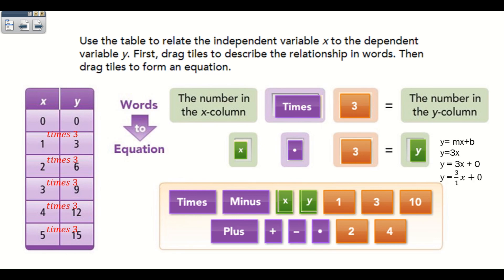Now we change those words into an equation: X times three equals Y. In point-slope form Y equals MX plus B, we write Y equals three times X, or Y equals three times X plus zero. The Y-intercept is zero, which means when X is zero, Y is also zero. Since the line passes through the origin (0, 0), we can conclude this is most likely a proportional relationship.